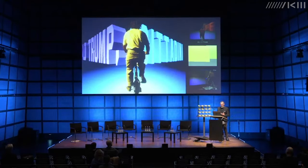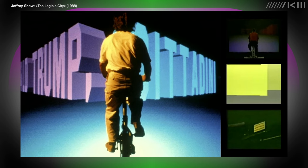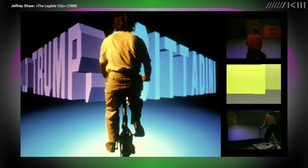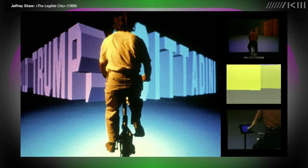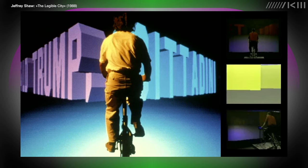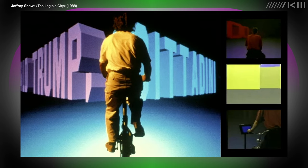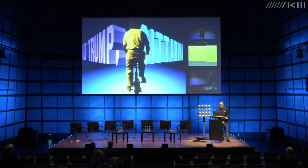Jeffrey Shaw's The Legible City from 1989 is a seminal classic piece from the ZKM collection. It consists of a stationary bicycle in a computer-generated virtual city — for example, Karlsruhe or New York — that can be explored by pedaling the bike. As the player navigates the virtual city, text and images are projected onto the walls around them, creating a dynamic multimedia experience. The Legible City consists of large projection screens displaying a virtual cityscape, and the stationary bicycle mounted on a pedestal serves as the interface for exploring the virtual environment.